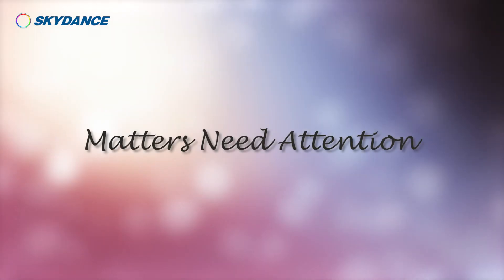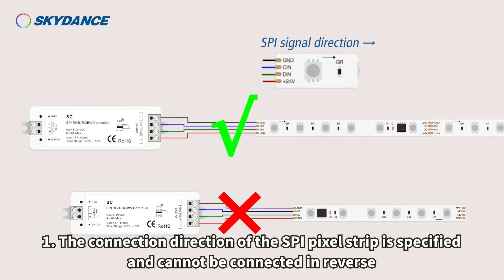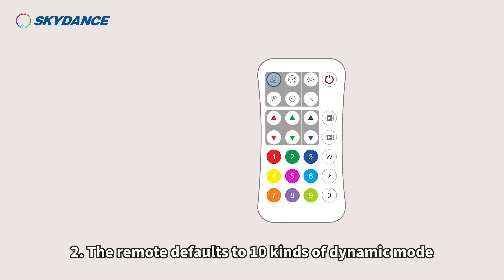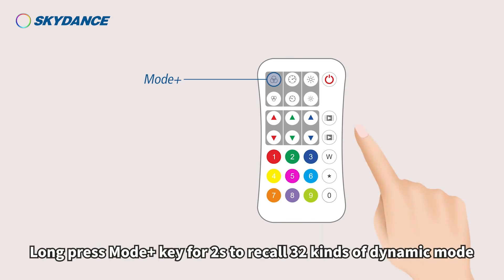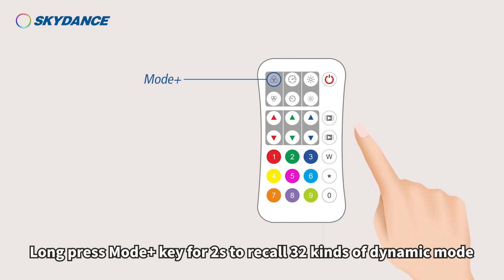Matters needing attention: 1. The connection direction of the SPI pixel strip is specified and cannot be connected in reverse. 2. The remote defaults to 10 kinds of dynamic mode. Long press the mode plus key for 2 seconds to recall all 32 kinds of dynamic mode.